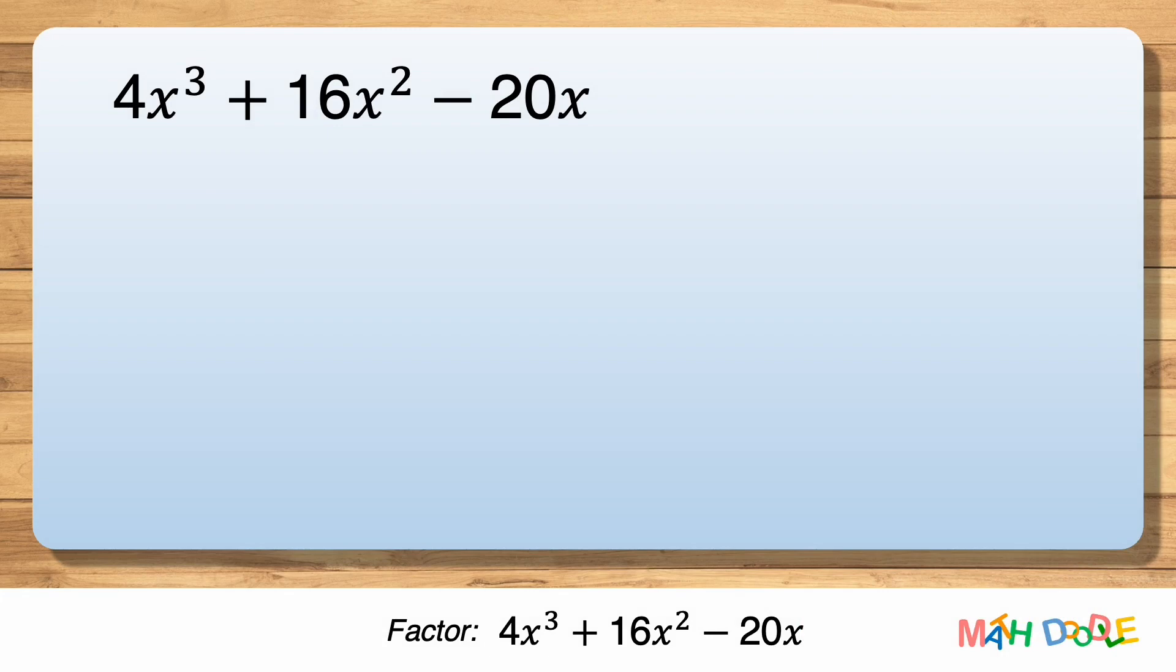To factor this trinomial, let's first see if there is a greatest common factor of its terms. We can see that the greatest common factor of the terms is 4x, so let's factor it out.